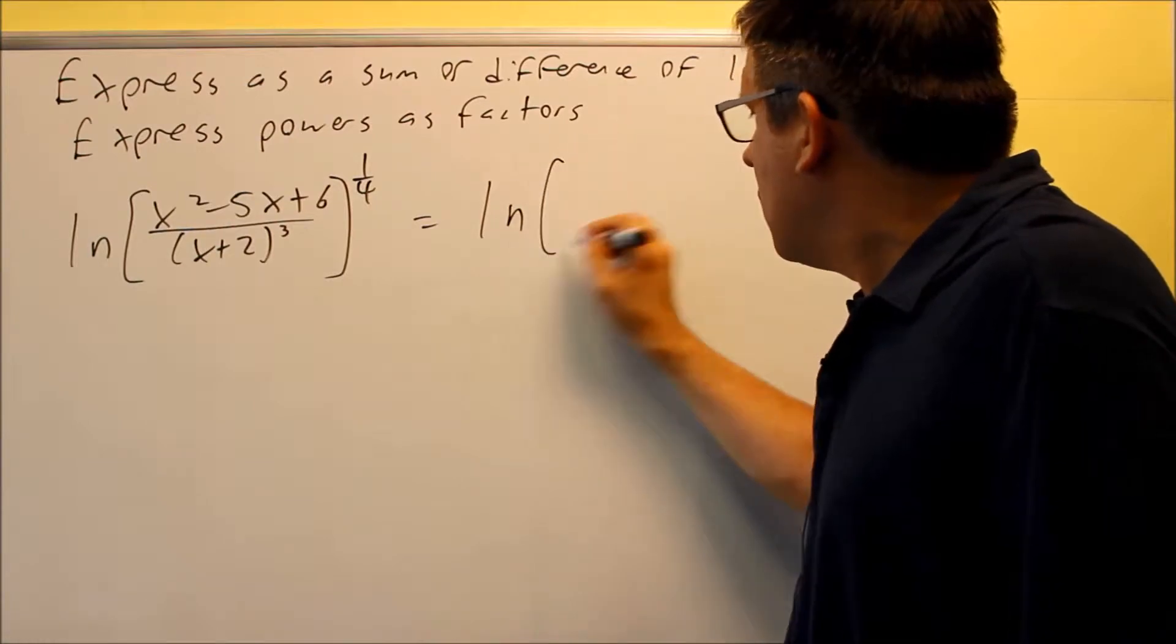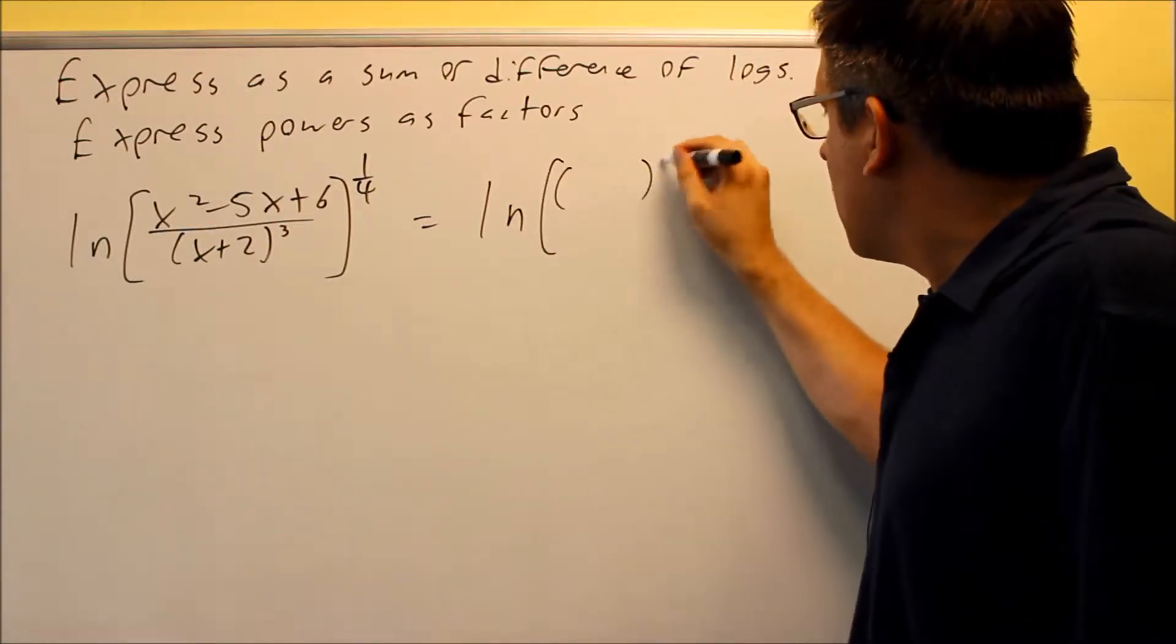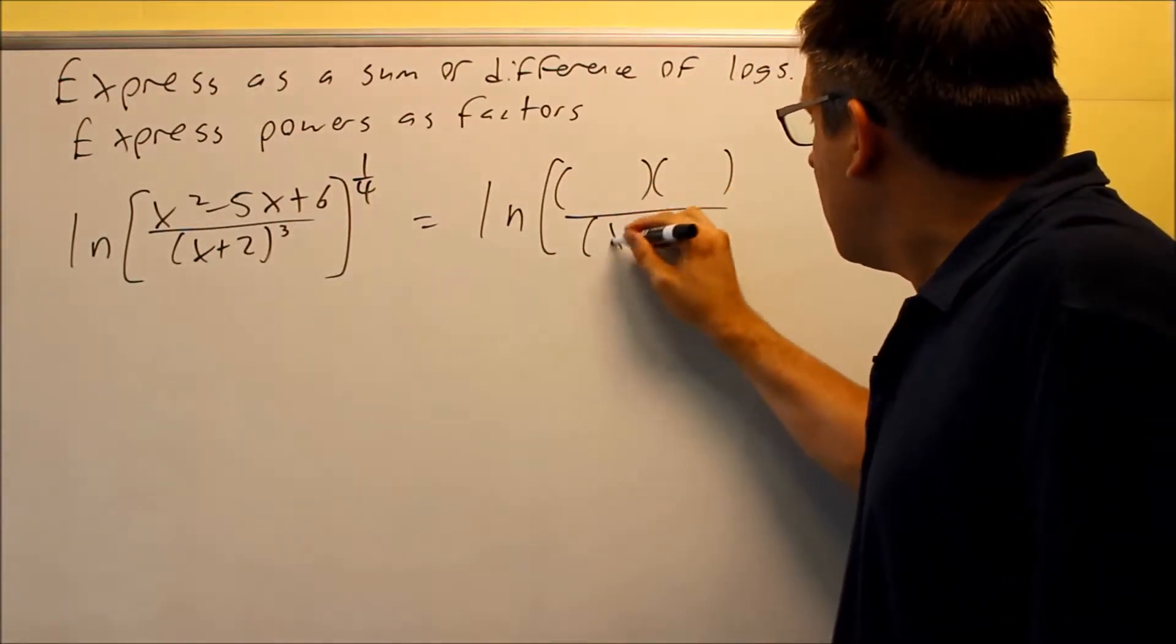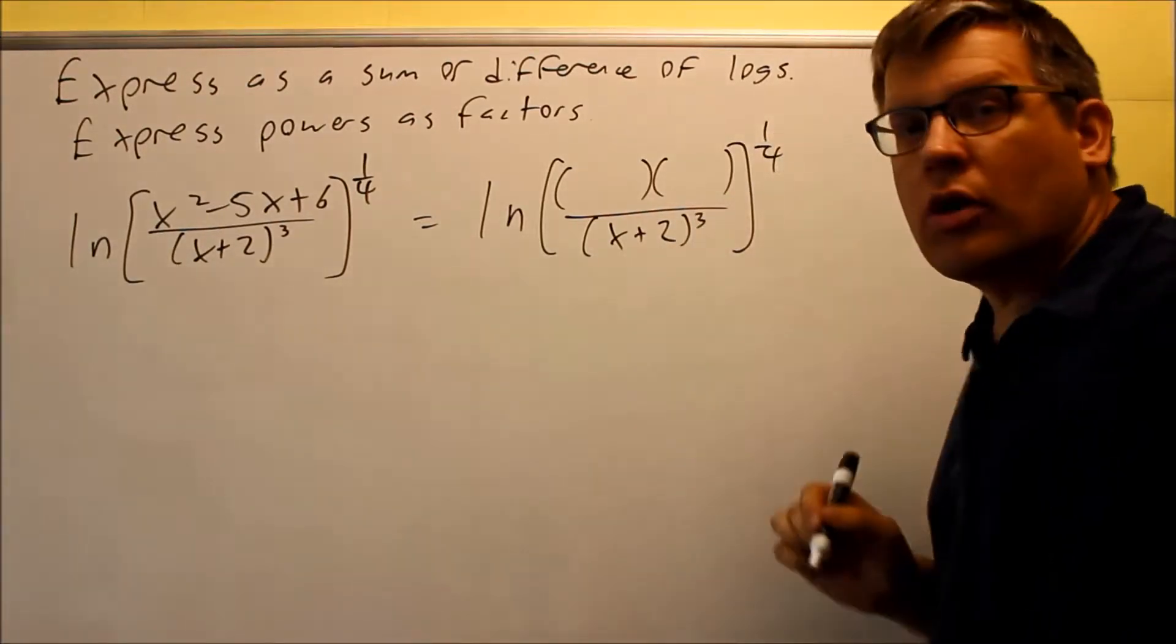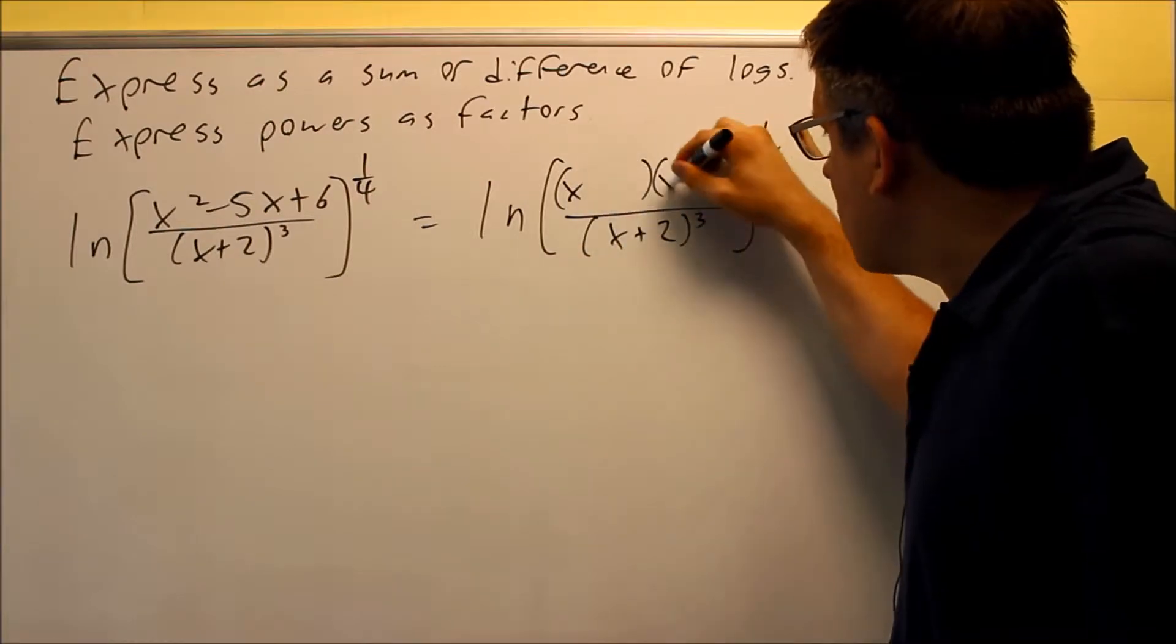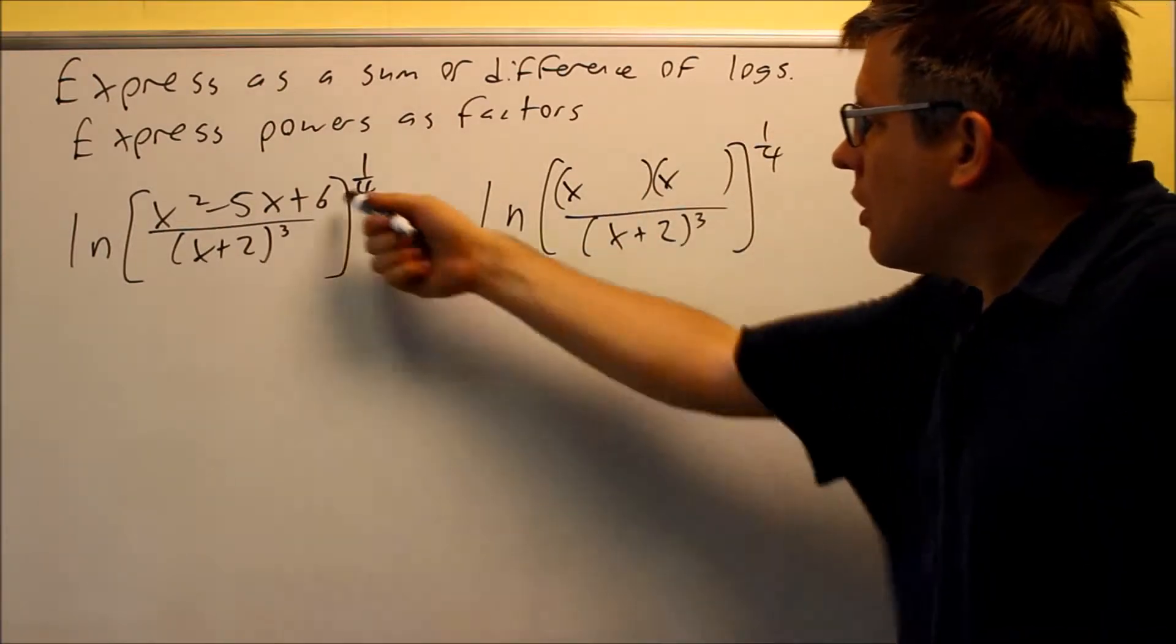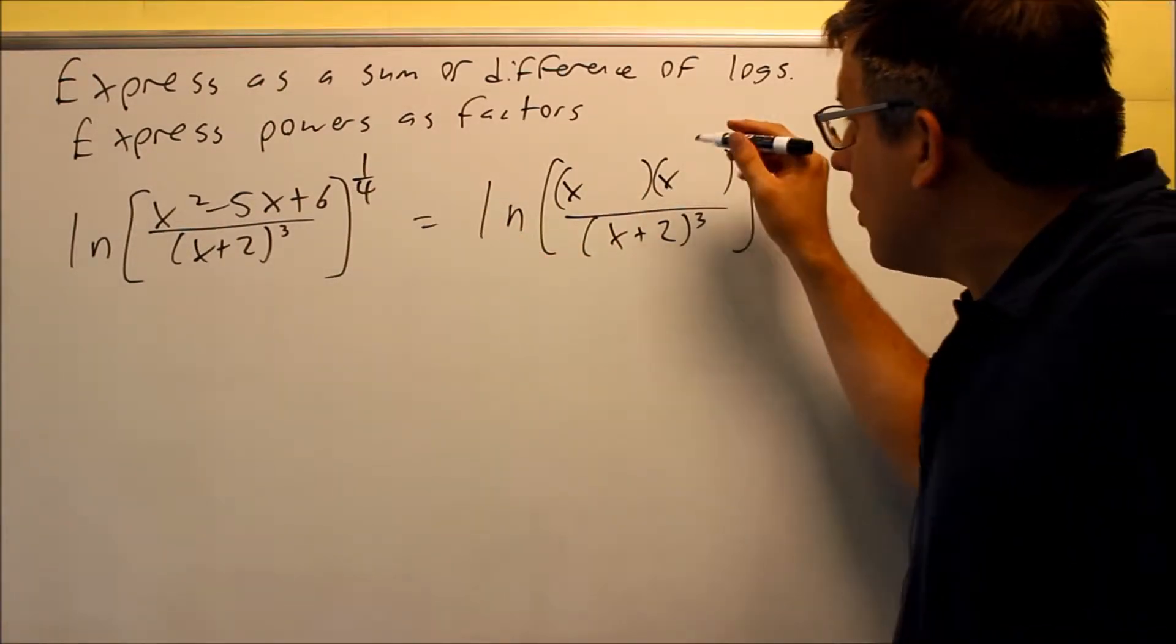So I'm going to do ln, natural log. I'm going to factor the top and see if I can cancel anything out from the bottom. This is still all being raised to the one-fourth power. I have x's here for each one of those. It has to add up to negative five,